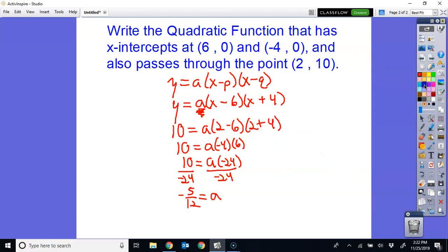So my equation, my final answer, would be y equals, my a value is negative 5 over 12, and then I have x minus 6 for my intercept of 6, and x plus 4 for my intercept of negative 4. So this would be my final answer for my intercept form. That would be my quadratic function.